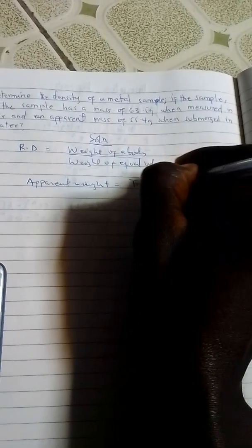To find the buoyant force, we know that we are given the apparent mass in the question. We can say that the apparent weight is always equal to the true weight minus the buoyant force.